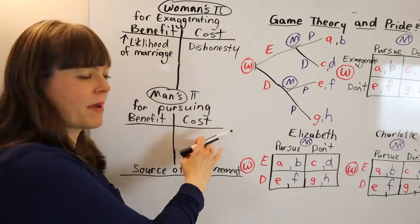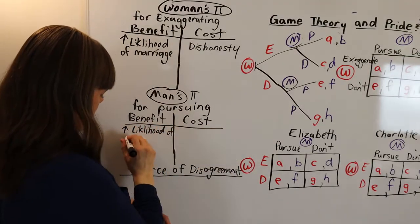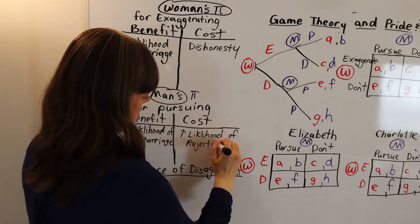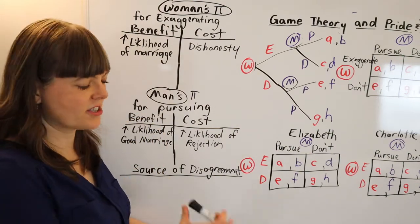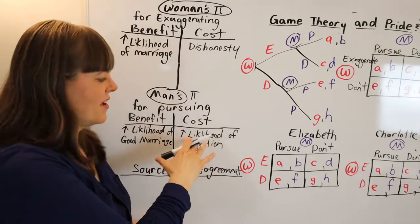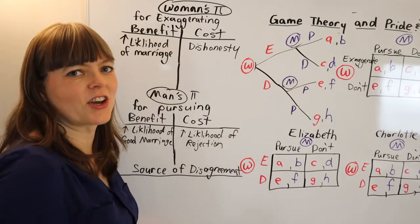And then you come up with something for the man's table. So I just put down if the man pursues, he increases his chances of having a good marriage. However, the cost of pursuing is that he increases his likelihood of rejection.